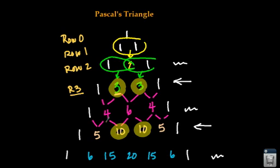So this is row 4. To the right of the one is a 4. To the left of the other one is a 4. That's how you know what your row number is.